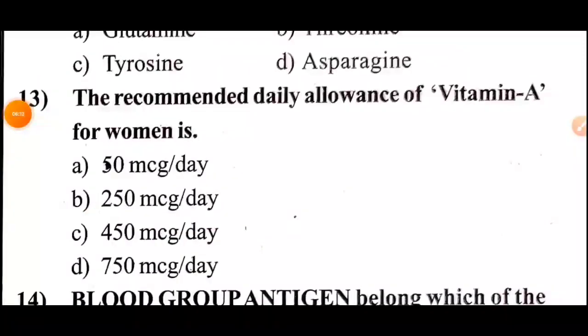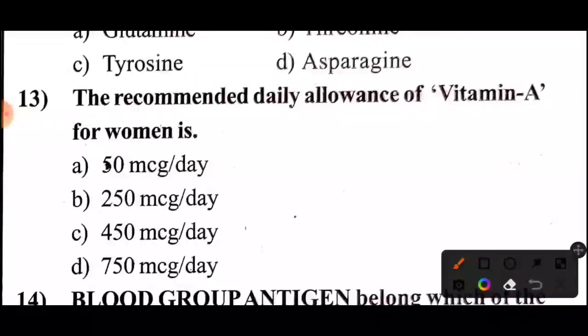Question 13: The recommended daily allowance of vitamin A for women. Options A, B, C, D — guess in 5 seconds. Answer: The recommended daily allowance of vitamin A for women is option D, 750 mg per day.